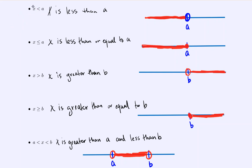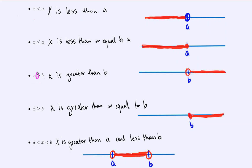Looking at the first one, x must be smaller than a because the smaller angle is pointed towards it, so that reads x is less than a. In the second, the larger side points towards x, making it the bigger number, and the smaller side points to b. I could say either x is greater than b, or equivalently, b is less than x.